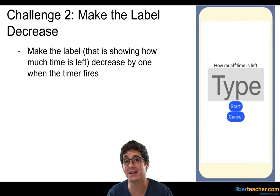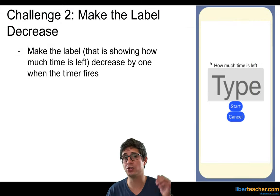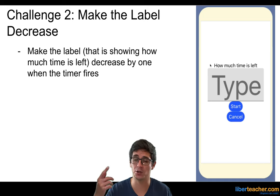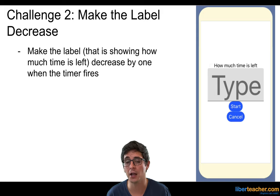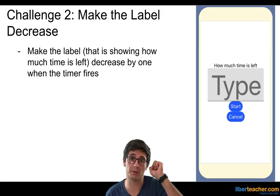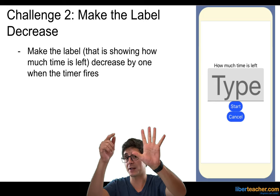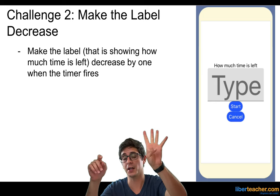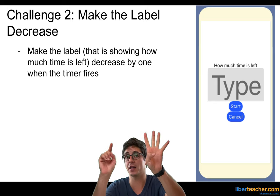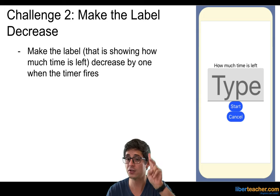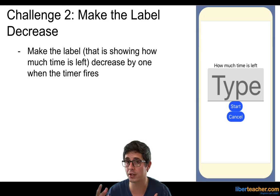We're going to make the label decrease. We need the label to change by one every second — every time the timer fires, we need the label to change by one. So let's say the label starts out with five: we need the label to subtract by one and become four, then subtract one again to three, then two. That's what we're going to try to do here.